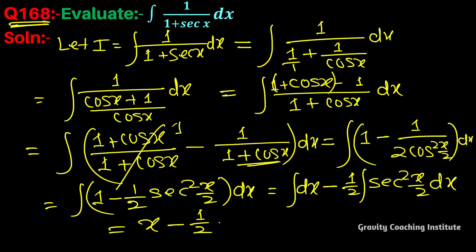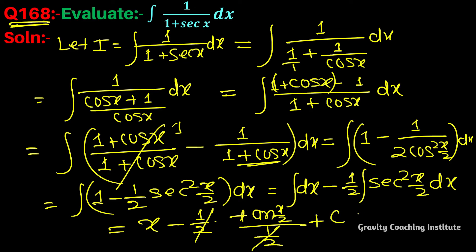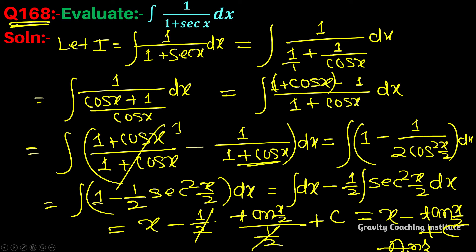The integral of sec²(x/2) gives tan(x/2). Since the coefficient of x is 1/2, we divide by 1/2, giving tan(x/2) divided by (1/2). So the final answer is x minus tan(x/2) plus C.